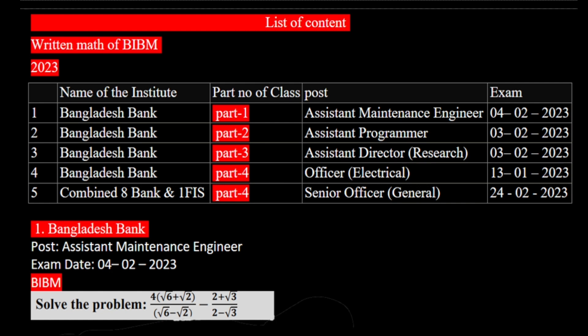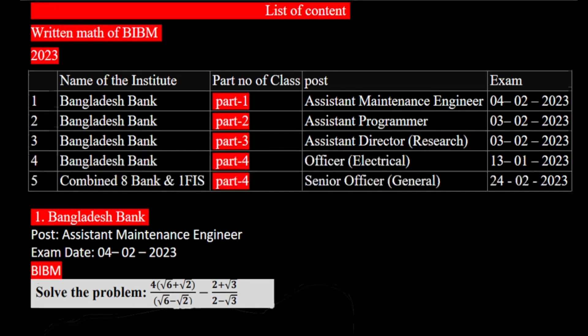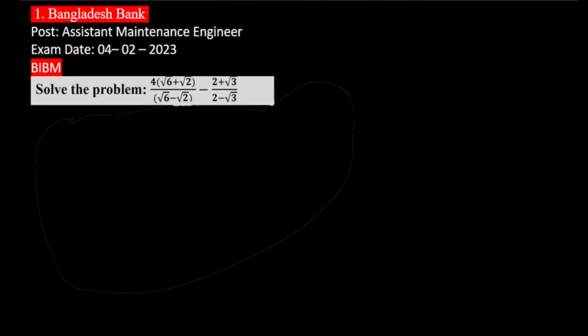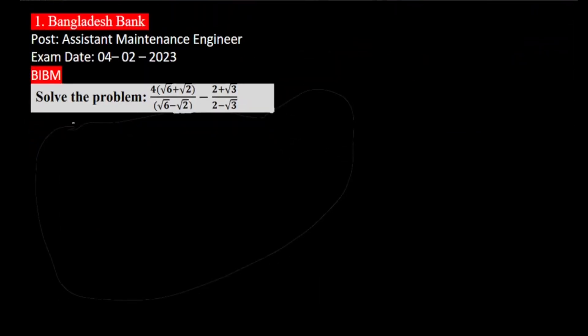What is the first question? In the first question, solve the problem: 4 into root over 6 plus root over 2 divided by root over 6 minus root over 2, minus 2 plus root over 3 divided by root over 2 minus root over 3.